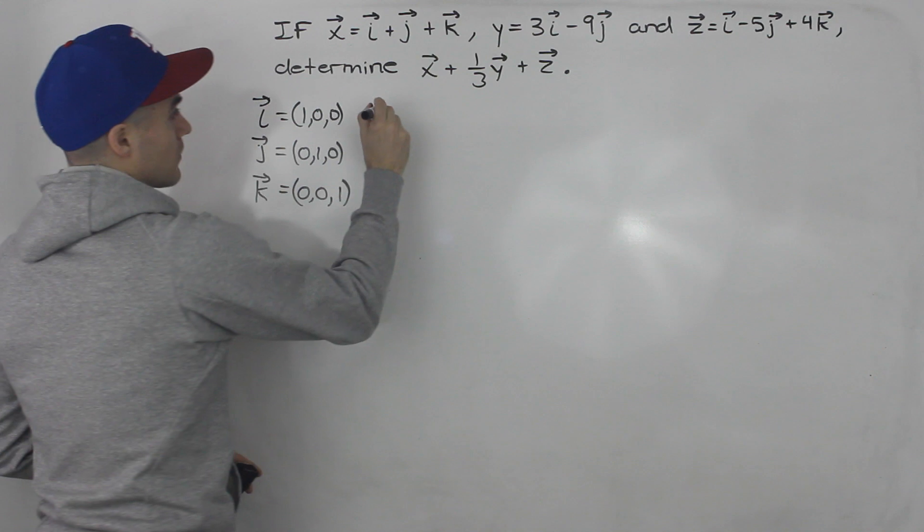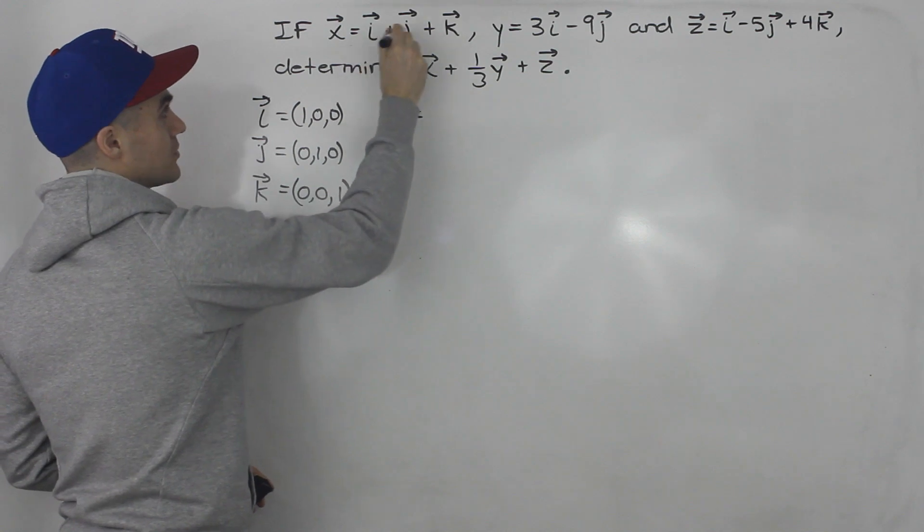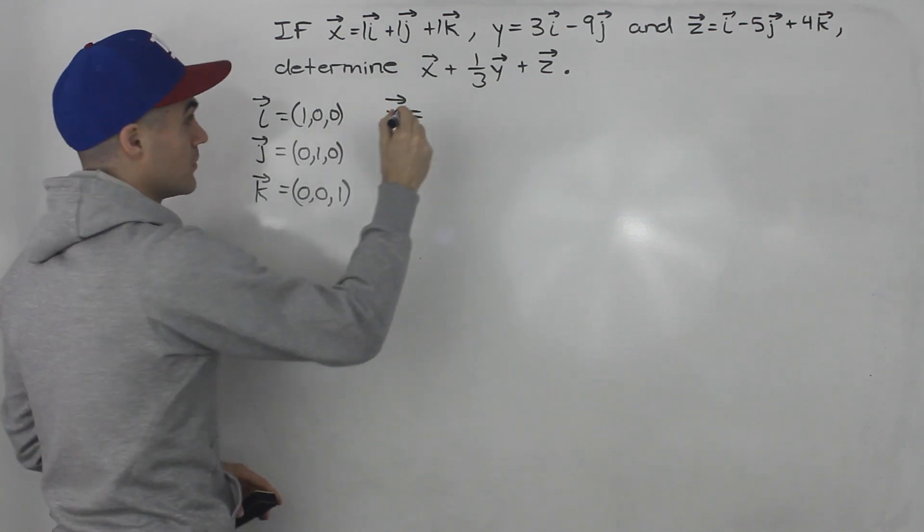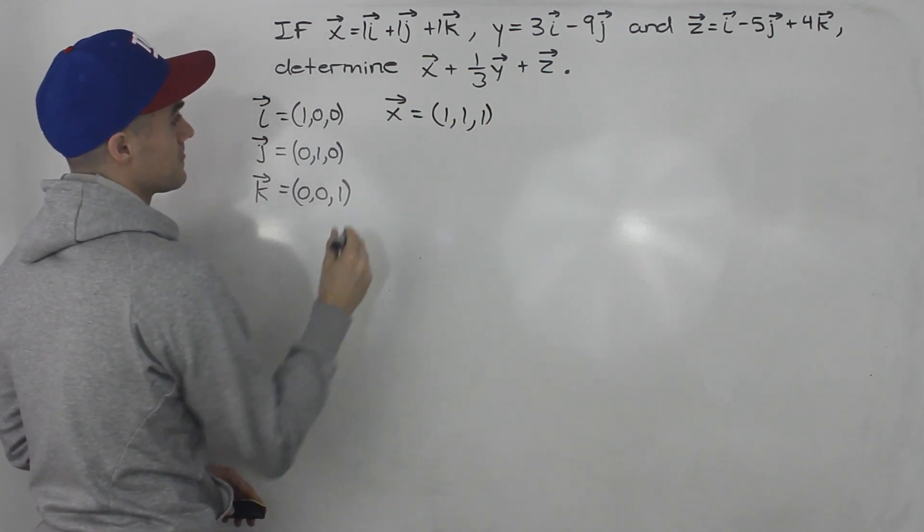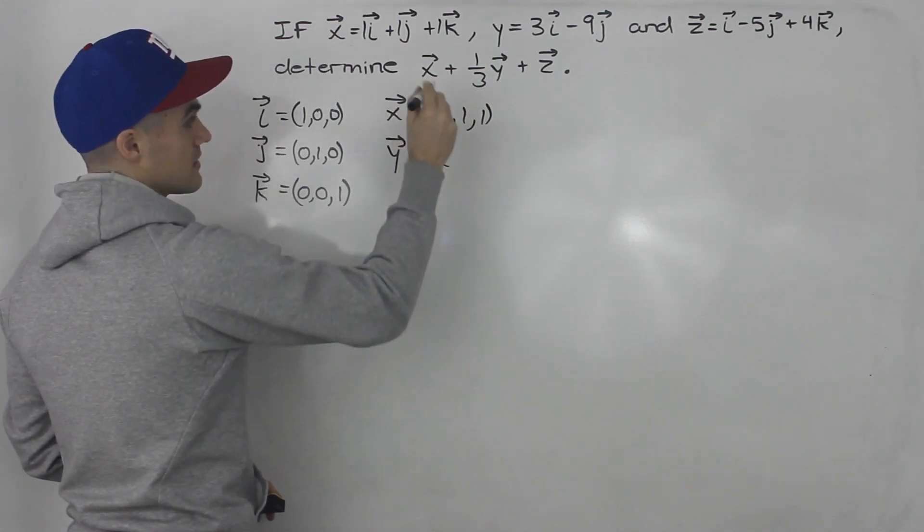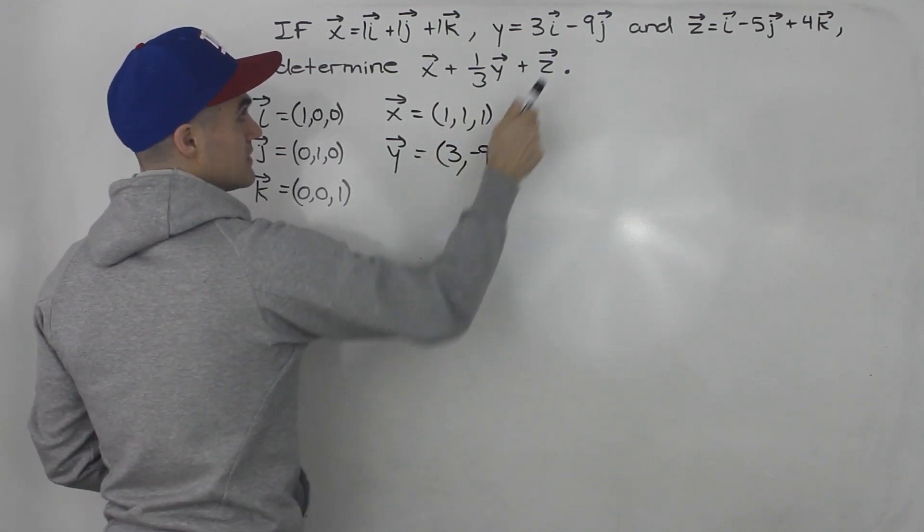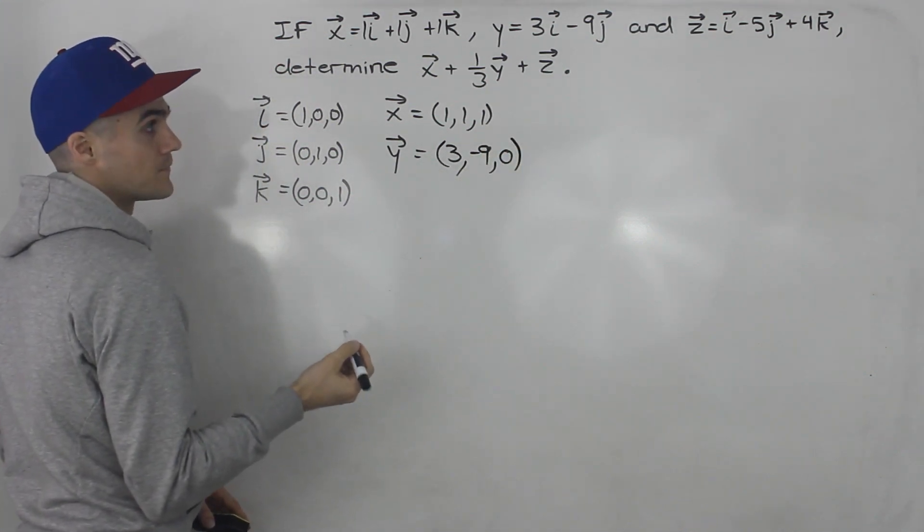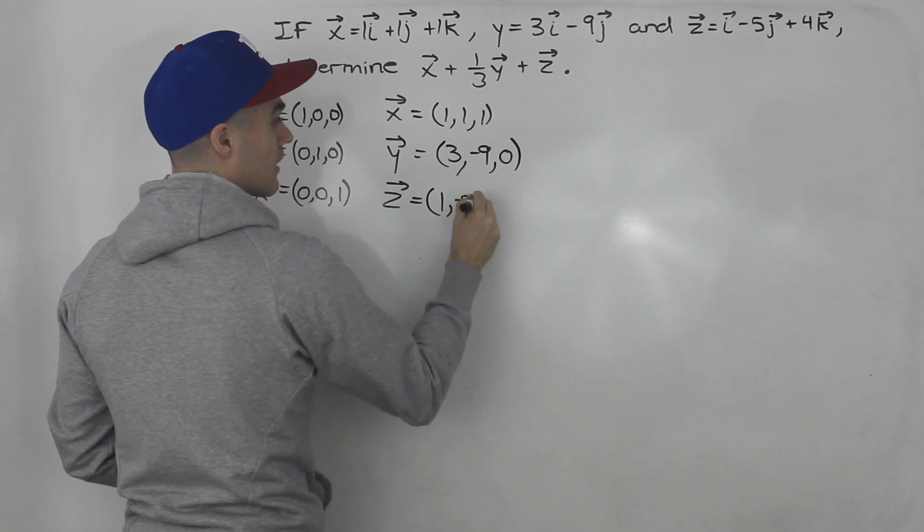So we can rewrite these vectors in this sort of coordinate form. If x is i plus j plus k, what are the coefficients in front of each? Well it's just 1 in front of all of them. So we know x is (1,1,1) like that. What about vector y? Well we got 3i minus 9j so we know that the x values are 3, the y values are negative 9, and then there is no k value. So the k value or the z value here in the bracket would be 0. And then we got (1, negative 5, and 4).